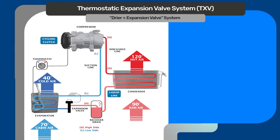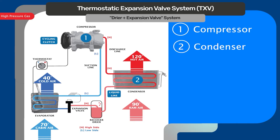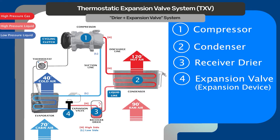The high side refers to the side of the system shown in red. The high side starts at the discharge side of the compressor and travels through the condenser where heat transfers to condensation, then to the receiver dryer, and finishes at the expansion valve. The compressor creates high pressure by compressing the low pressure vapor from the evaporator so that the high pressure vapor can release heat at the condenser.